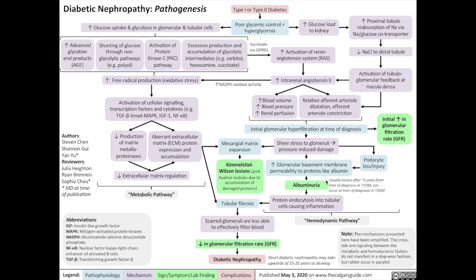Now let's talk about the hemodynamic pathway. Chronic hyperglycemia will increase the glucose load going to the kidney. Increased glucose in the proximal tubule will result in increased proximal tubule absorption of sodium, because sodium and glucose are reabsorbed back into the blood via the same co-transporter. More sodium reabsorption in the proximal tubule means less sodium going to the distal tubule, resulting in activation of tubuloglomerular feedback at the macula densa. Simultaneously, excessive production of glycolytic intermediates such as succinate via GPR-91 will result in activation of the renin-angiotensin system. Both of these together result in increased intrarenal angiotensin 2.